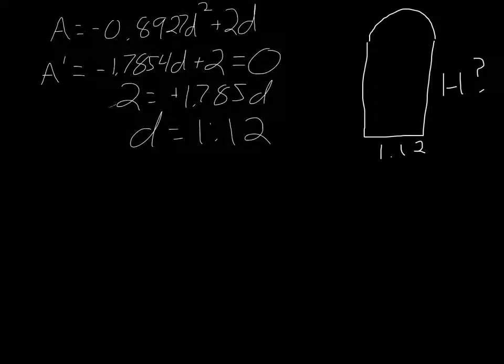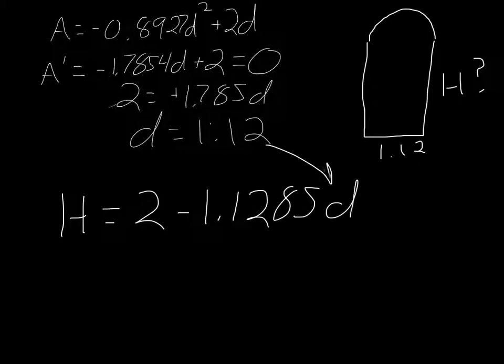Well, remember from our perimeter equals 4 thing, we made the equation that h = 2 - 1.1285d. So we can just plug d in here, solve, and you'll find that h = 0.56.